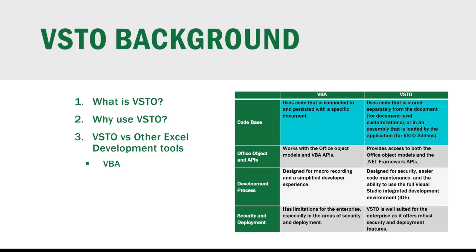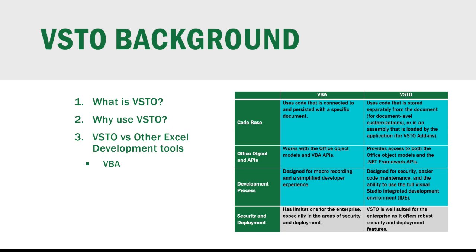This means for VBA, the code is part of the document and we can see it when we open the file. For VSTO, we are not able to see the code for document-level customization or add-in solutions. Contrasting them on the Office object model and which APIs they use, VBA works with the Office object model and VBA APIs. VSTO also works with the Office object model and the .NET Framework APIs. VBA is best suited for macro recording and a simplified developer experience. VSTO is designed for security, easier code maintenance, and the ability to work with the full capabilities of Visual Studio. In the area of security and deployment, VBA has limitations — it doesn't offer much for security and deployment and is not well suited as an enterprise software solution. VSTO, on the other hand, is well suited for the enterprise as it offers robust security and deployment features.